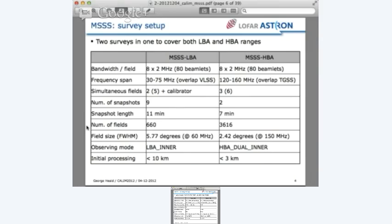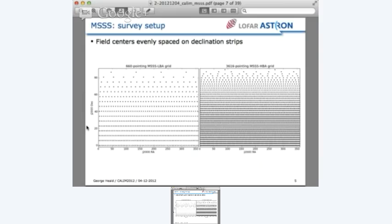This is illustrating the pointing grids. This has been done before for other surveys. We just space the fields equally on declination strips, covering everything north of declination zero.